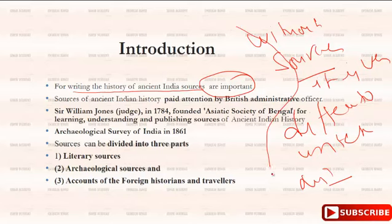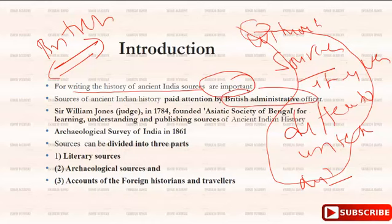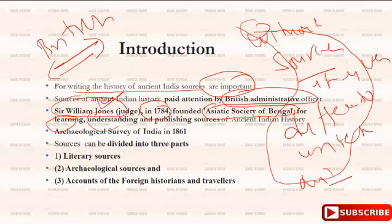This entire process of searching and interpreting sources was first started by the British administrative officers. For this purpose, in 1784, Sir William Jones established the Asiatic Society of Bengal. The main purpose of the Asiatic Society of Bengal was learning, understanding, and publishing the sources of ancient Indian history — how to interpret and publish those sources so that they can benefit from what happened in ancient India.